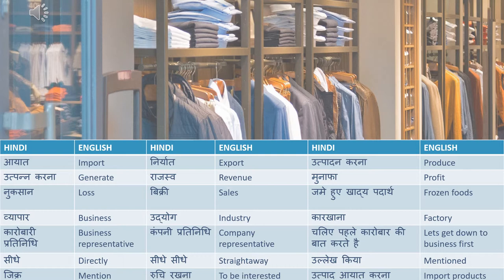Industry comes up in dialogues like 'this industry has improved a lot.' The factory is the business representative. We call the representative, representative. The business is the company representative.